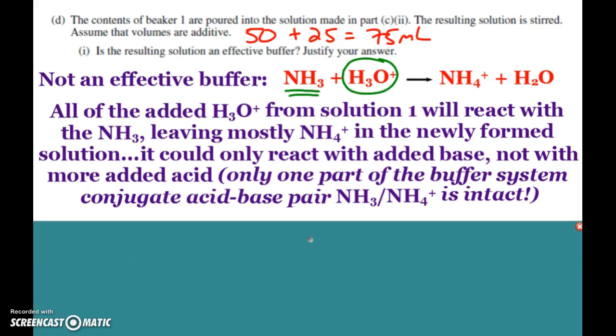So that's a good buffer solution when you pour beaker two and three together. However, now that we dumped in the hydrochloric acid, you can see that it reacts with the ammonia, essentially taking it all away. All of the added hydroniums from solution one reacts with the ammonia and pretty much gets rid of it, turns it into ammonium. So now we pretty much only have half of a buffer system. Yes, if you added base the ammonium part would work, but we don't have both parts of our buffer system.